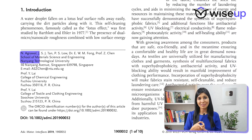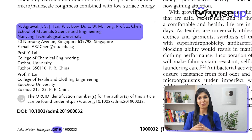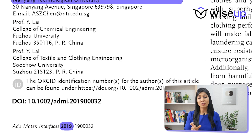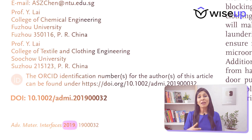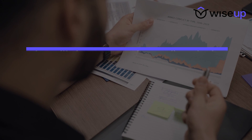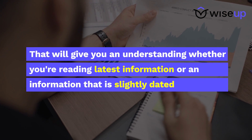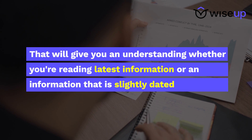Once you've read the journal name, quickly skim through the author name, affiliation, and the date of publication. By looking at the year of publication you will understand how old or how recent the paper is, giving you an understanding of whether you're reading the latest information or something slightly dated.